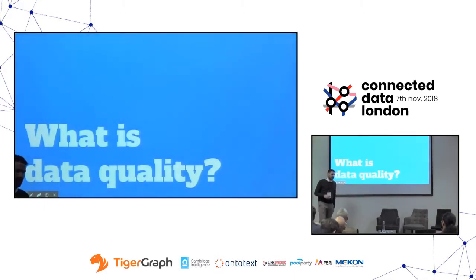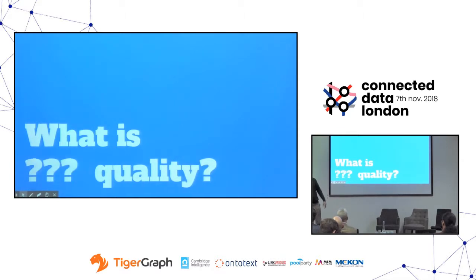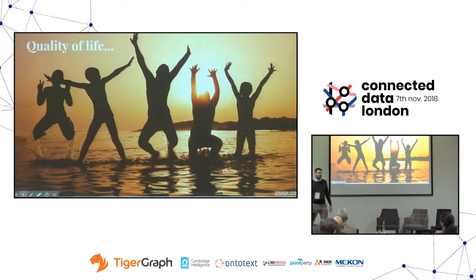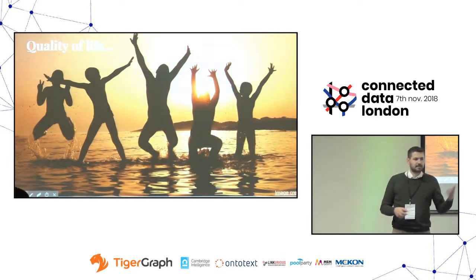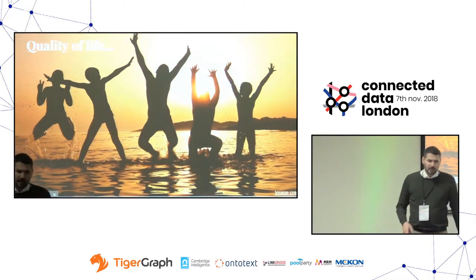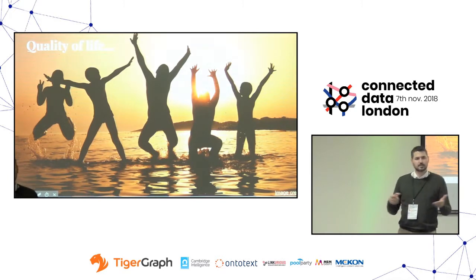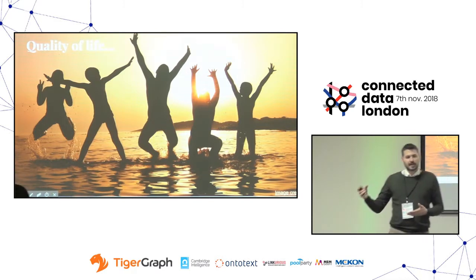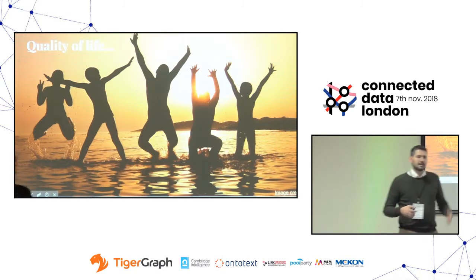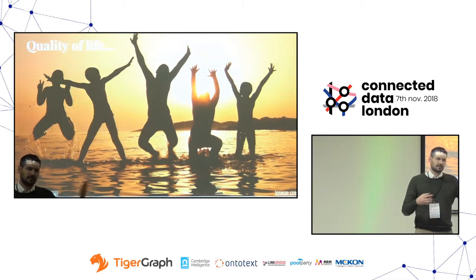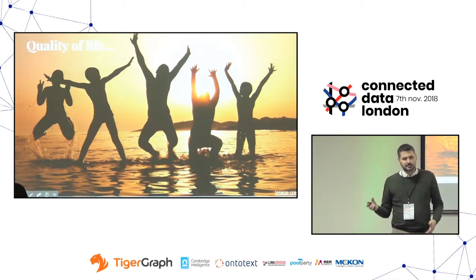So what is data quality? It's not easy to answer because quality in general is not easy to define. For example, quality of life — we have a quality of life index published every year. Based on metrics like house price, consumer power, criminality, and pollution in the area, different factors play a role and let you say if one city is better than another.